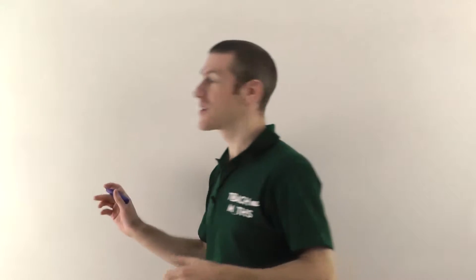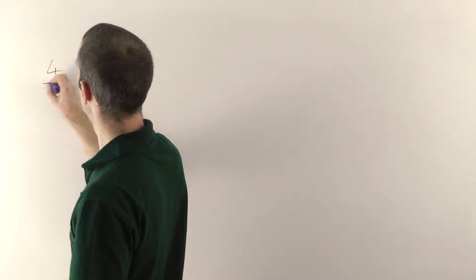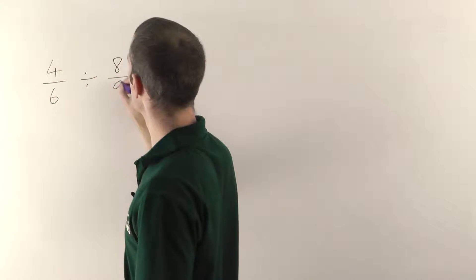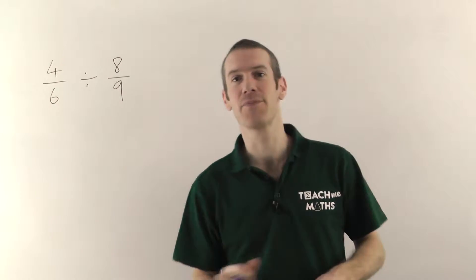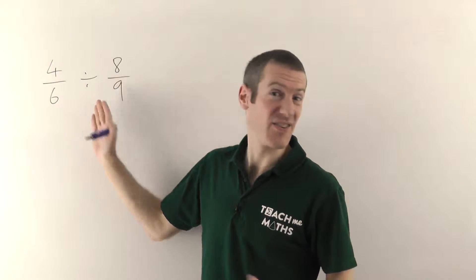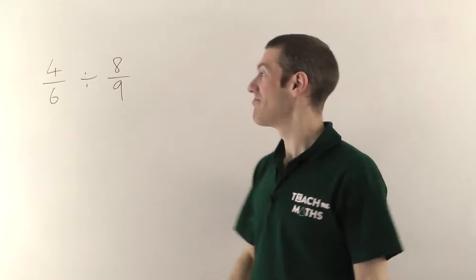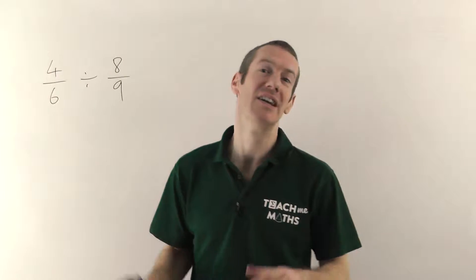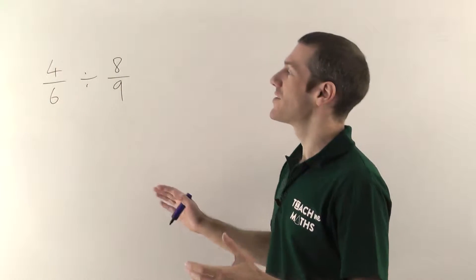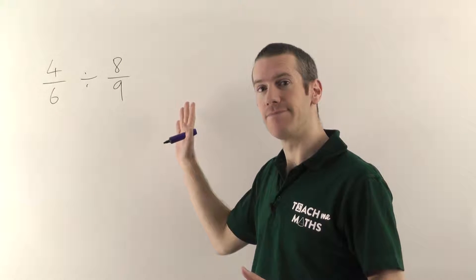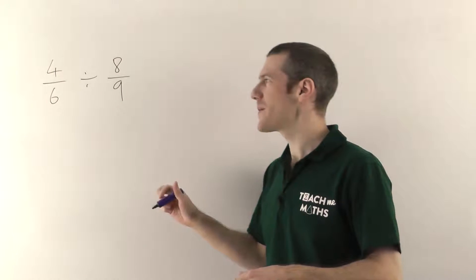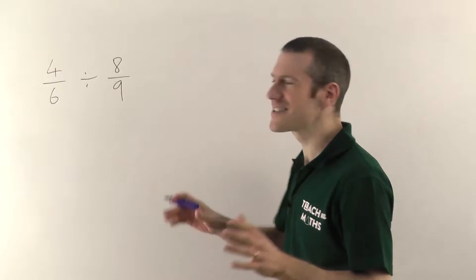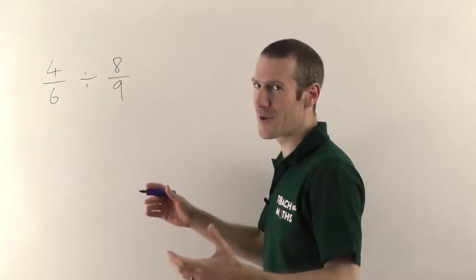So we'll log straight in with an example. We'll have 4 sixths divided by 8 ninths. Now I'm going to let you into a little secret here. It turns out that you can't divide fractions in maths — you just can't do it. But some clever mathematician a few hundred years ago discovered that you could actually turn a division into a multiplication. A lot of people ask me why you're allowed to do this and I'll try and explain it at the end of the video. But for now just suspend your disbelief and follow it through with me.